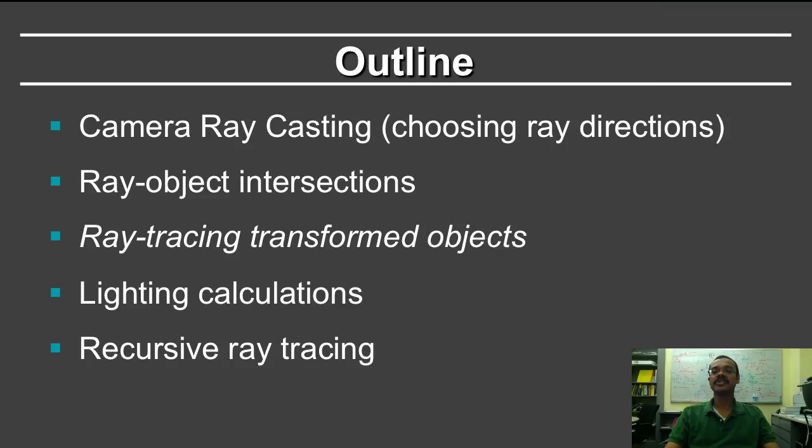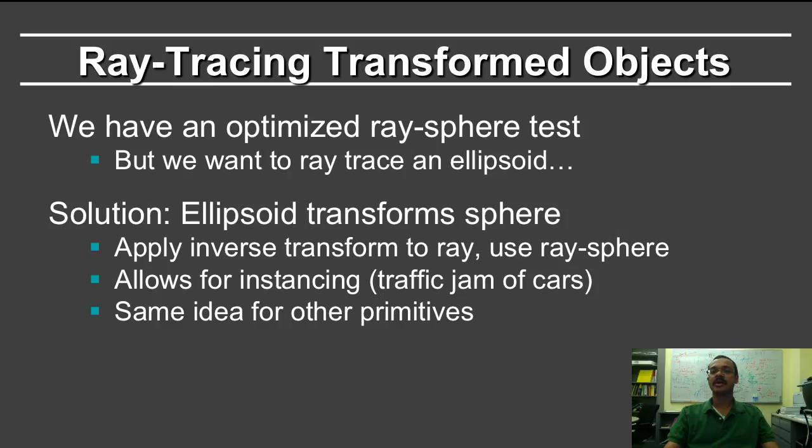The next topic we are going to study briefly is ray tracing transformed objects. Here we have an optimized ray sphere test for example, but now we want to trace against an ellipsoid. This is something that you will actually consider in homework 3. Of course you could define a new ray ellipsoid intersection routine, but that may be inefficient because your ray sphere routine is optimized.